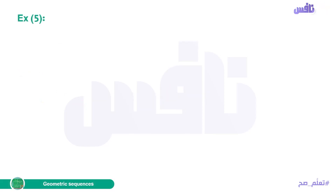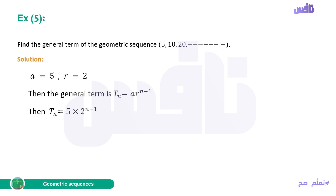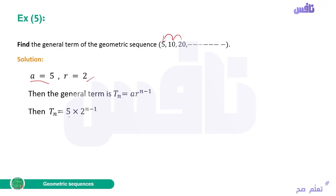Example 5: find the general term of the geometric sequence 5, 10, 20, ... The first term A=5. R = 10/5 = 20/10 = 2. The general term is Tn = A · R^(n−1), so Tn = 5 · 2^(n−1).